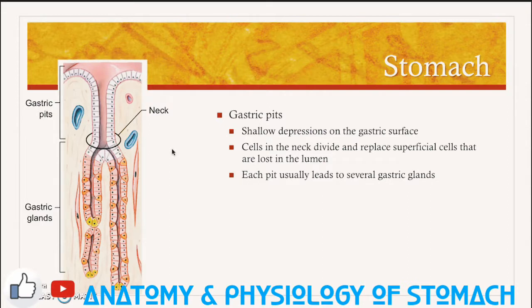On the inner surface of the stomach there are shallow depressions called gastric pits. The cells at the base of these pits divide and replace the superficial cells that are lost into the lumen. This ensures that the epithelium remains intact. Each gastric pit leads to several gastric glands.